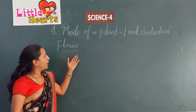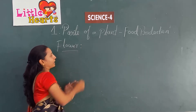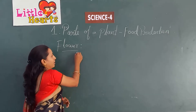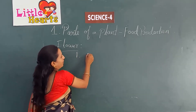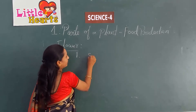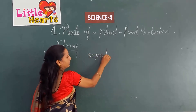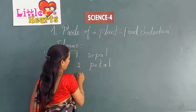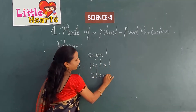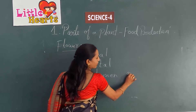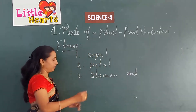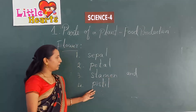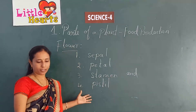A flower contains four main parts. The first one is sepal, the second is petal, the third one is stamen, and the last one is pistil. These are the main parts of a flower.